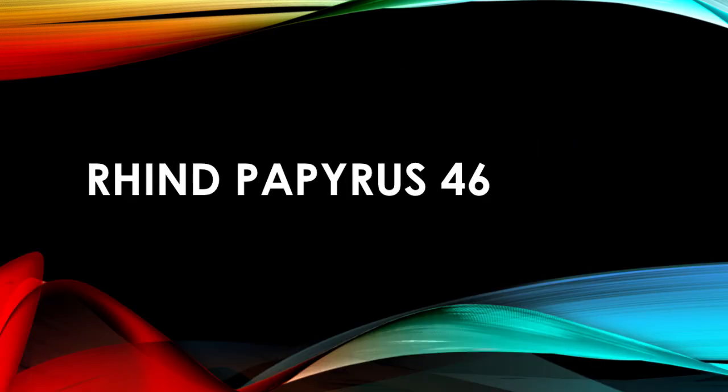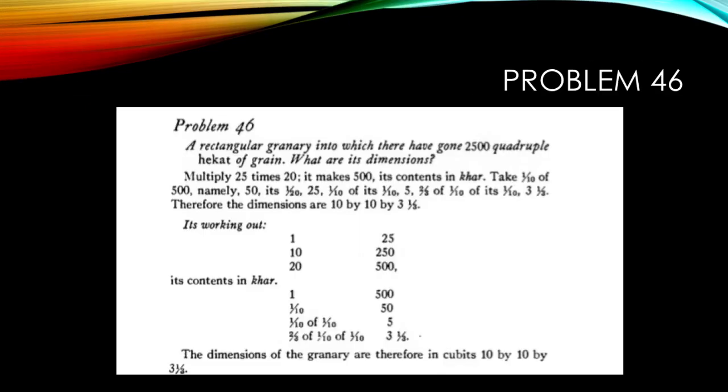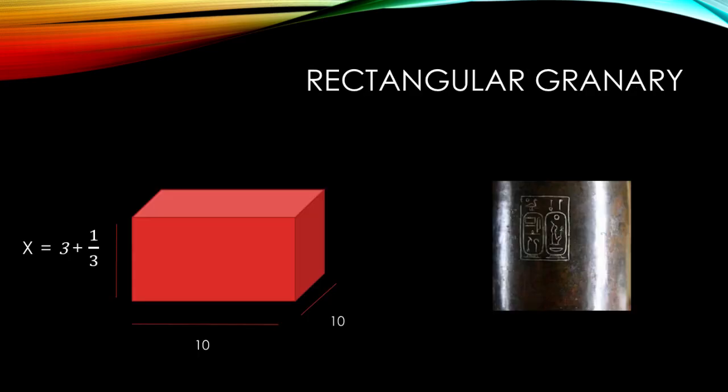Problem 46 is the exact same thing as 45. The only difference is that we have a volume of 25 instead of the 75. So if we want to do it the quick way, we just realize that it's one third of the volume in the previous question. So all things remaining equal, we get a dimension of 10 by 10 by 3 and one-third. You take 10 and you divide it by 3. It gives you 3 and one-third.